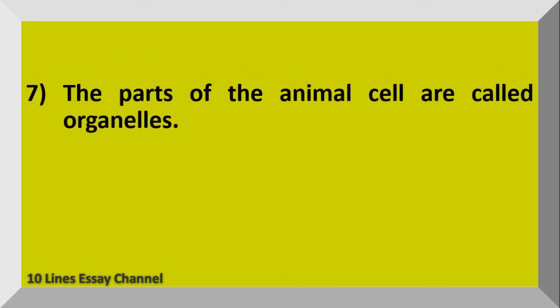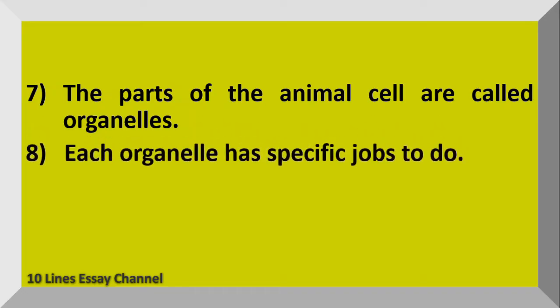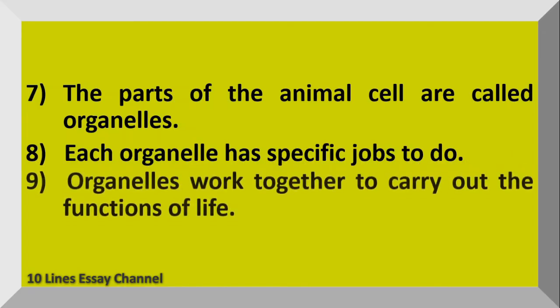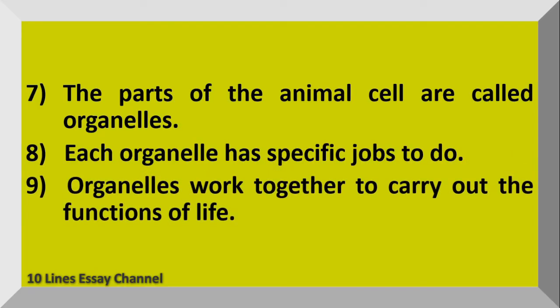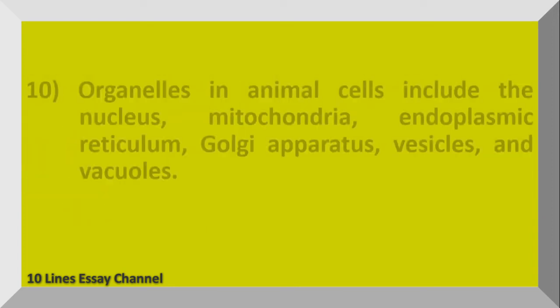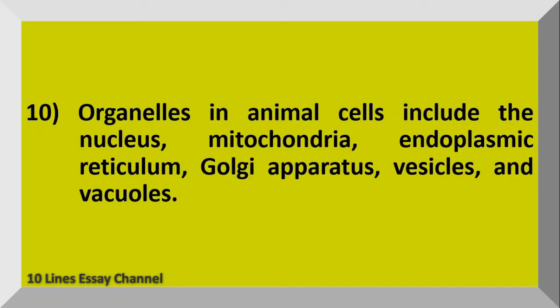The parts of the animal cell are called organelles. Each organelle has specific jobs to do, and organelles work together to carry out the functions of life. Organelles in animal cells include the nucleus, mitochondria, endoplasmic reticulum, Golgi apparatus, vesicles, and vacuoles.